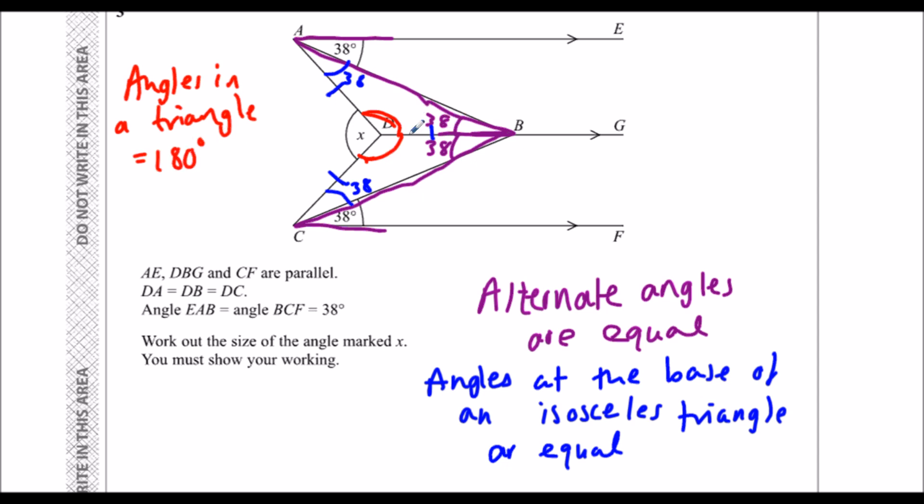So I've got 38 and 38 so far. 38 plus 38, that's 76. So if I do 180, take away 76, I'll get 104 degrees. So these two red ones here are 104 degrees because angles in a triangle add up to 180.